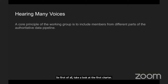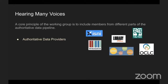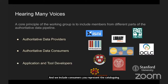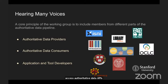A core principle of really both working groups is to include members from different parts of the authoritative data pipeline. We have authoritative data providers to improve our understanding of how their data is being used. And we include consumers who represent the cataloging community and others who use authoritative data.